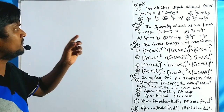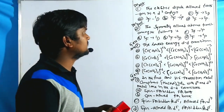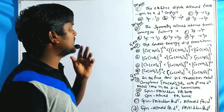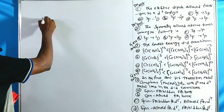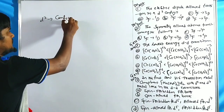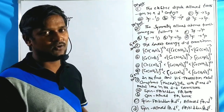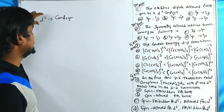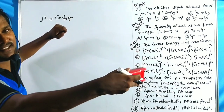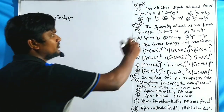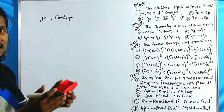Problem number one is from the December 2012 CSIR exam: electronic dipole allowed transitions in the D2 configuration. Since the options are already given, we don't need to calculate the D2 ground term and first excited term ourselves — we just evaluate each of the four options to determine whether it is an allowed or forbidden transition.